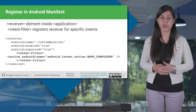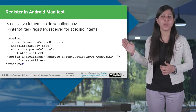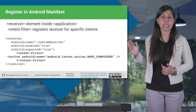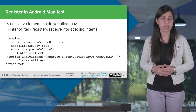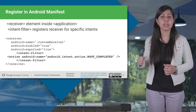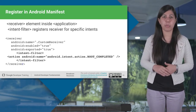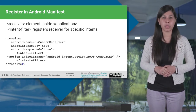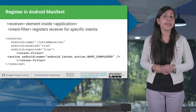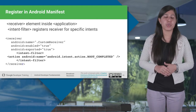A receiver entry must be added containing one or more intent filters, each containing the action string of the broadcast intent for which the receiver is required to listen, as you can see in the example. Remember, just like any other component, we define this receiver element inside the application element.